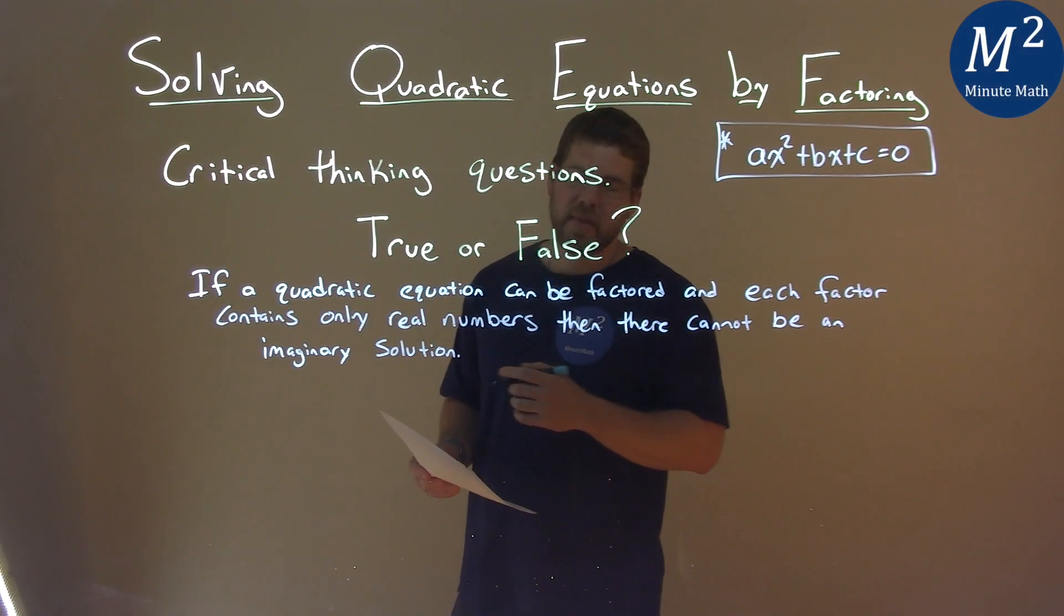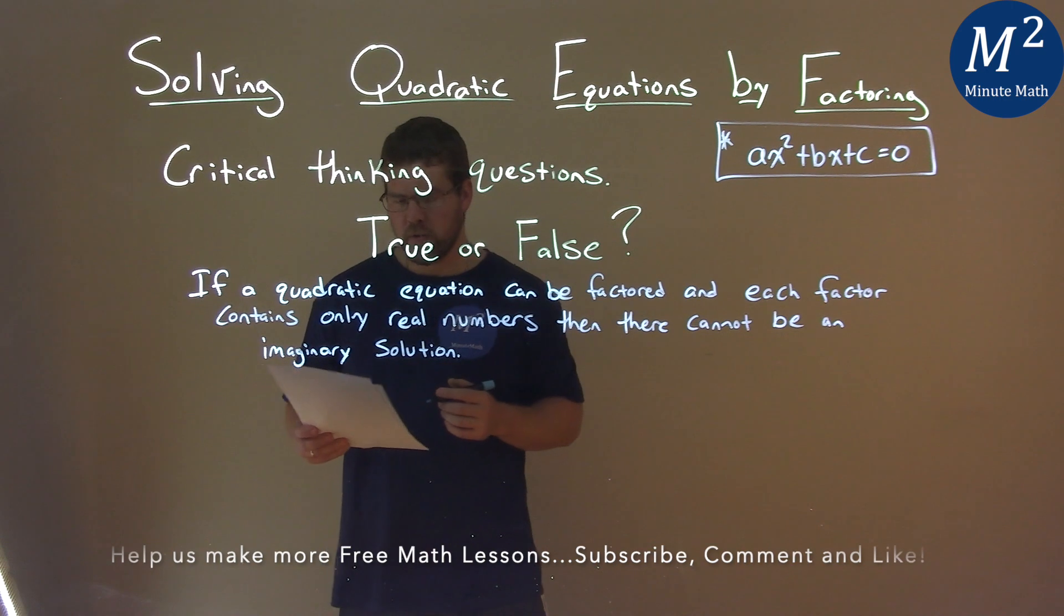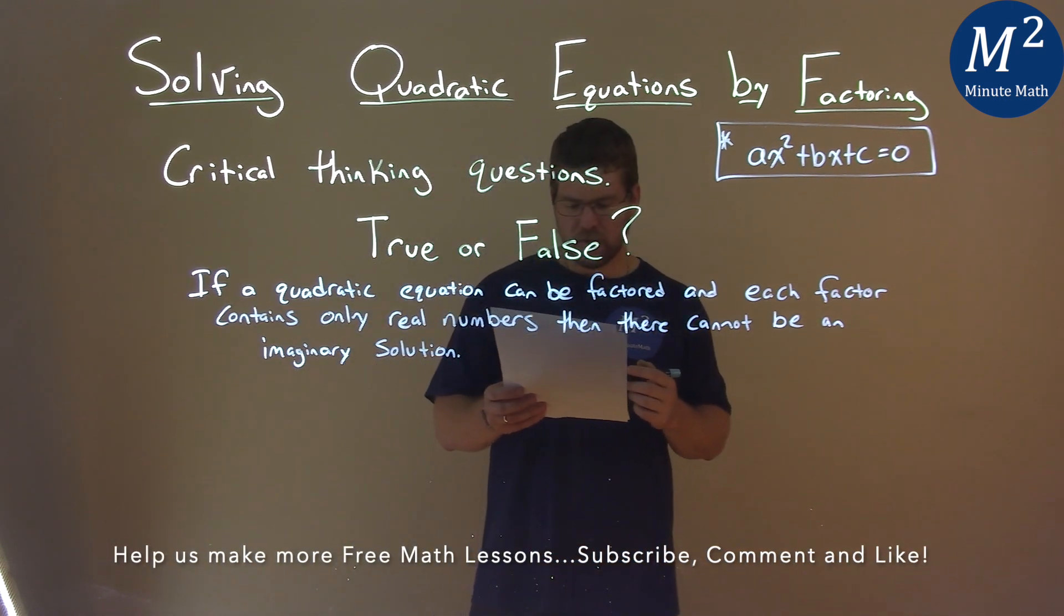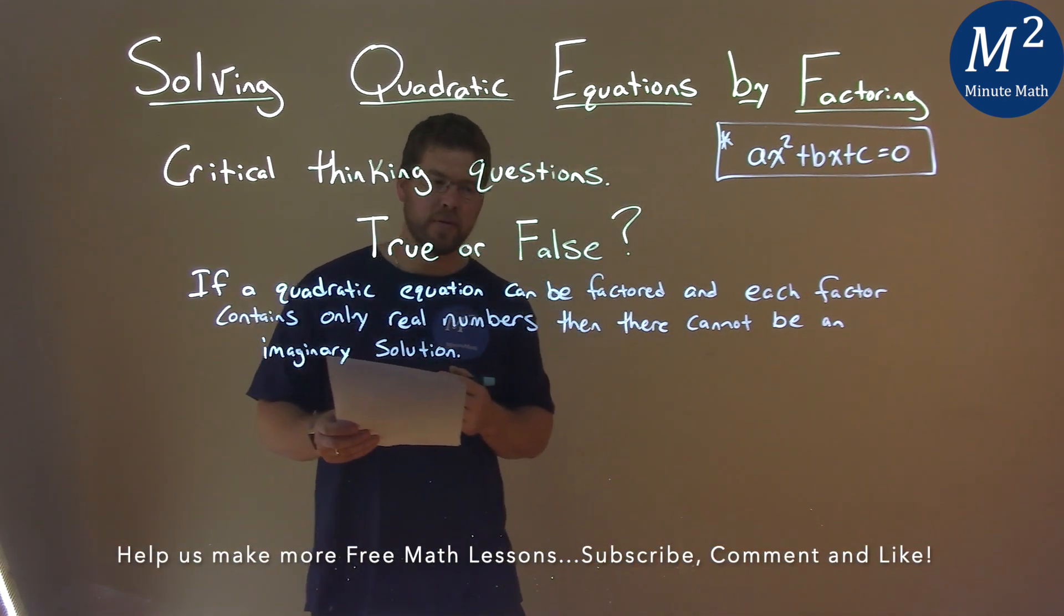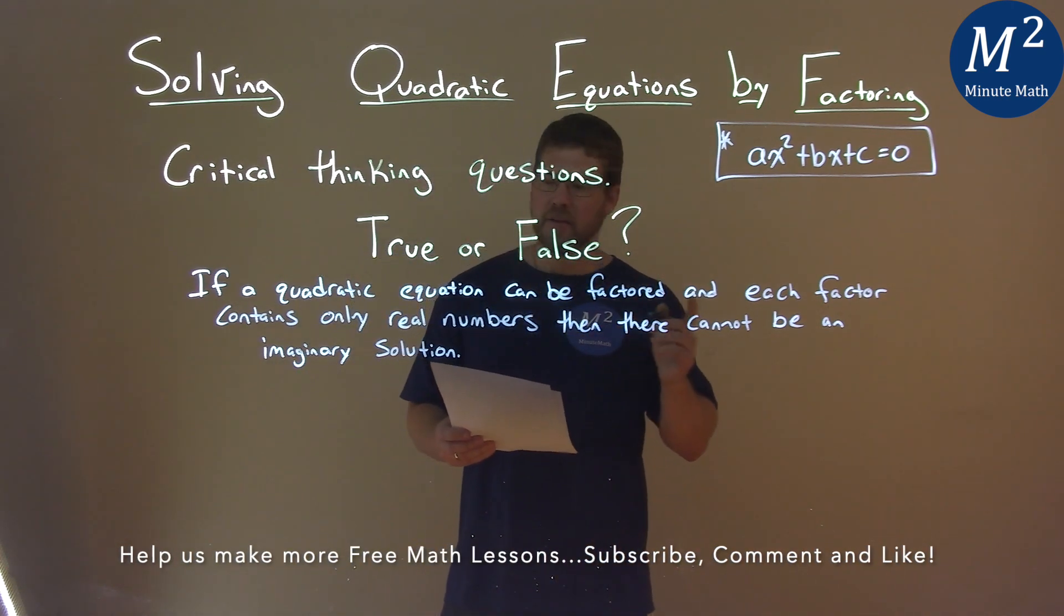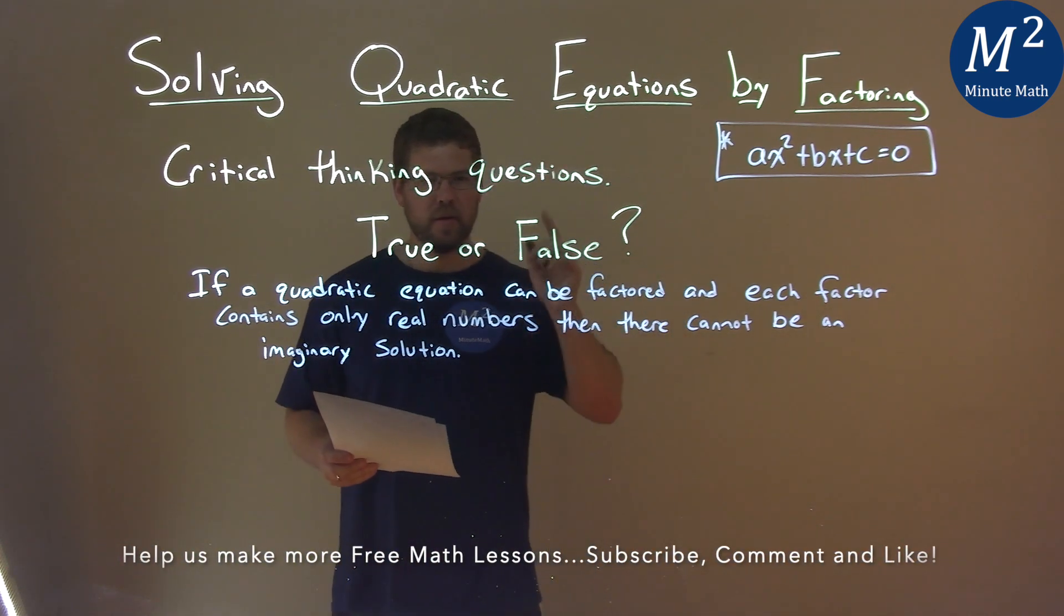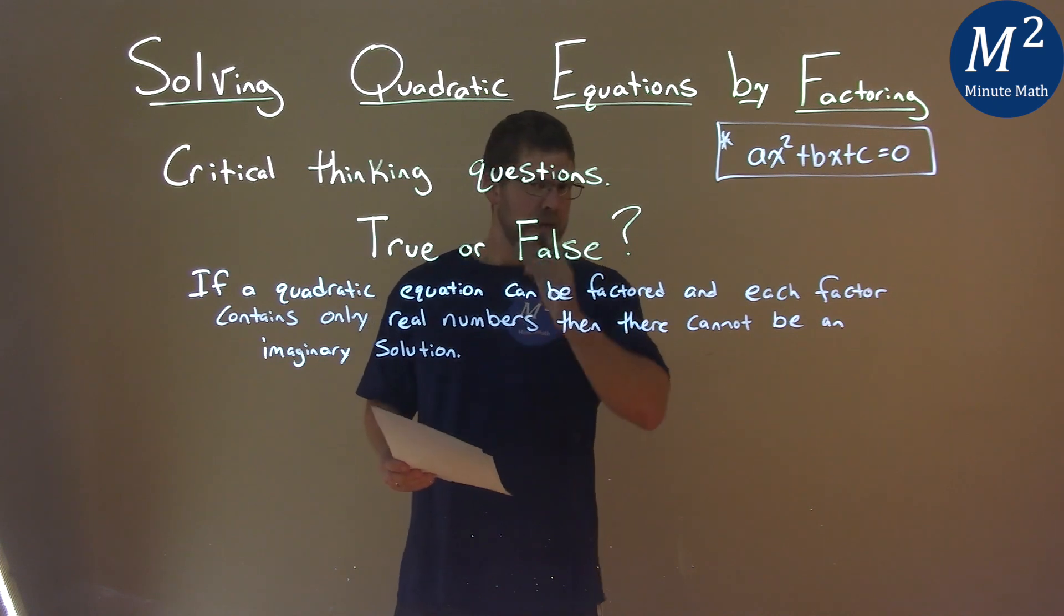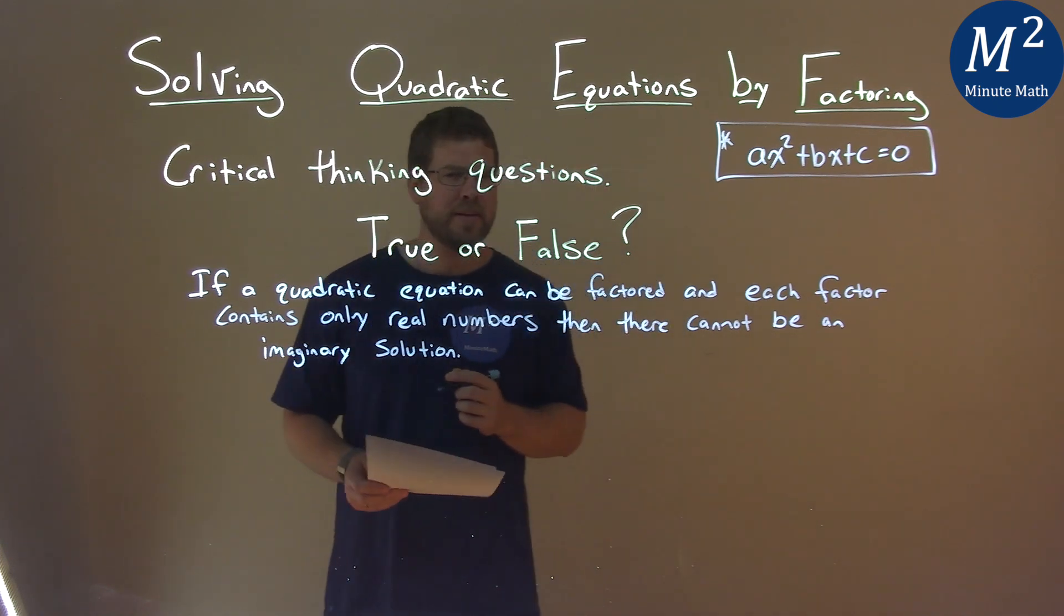We're given this question. If a quadratic equation can be factored, and each factor contains only real numbers, then there cannot be an imaginary solution, true or false. Take a moment to think about it. Let me know what you think down below.